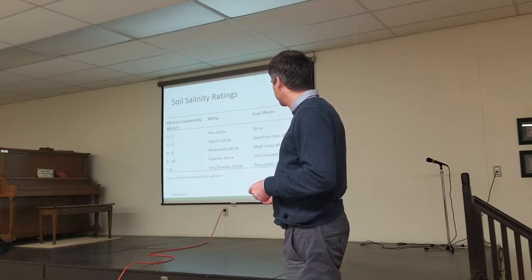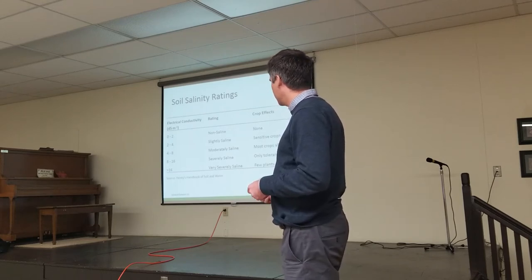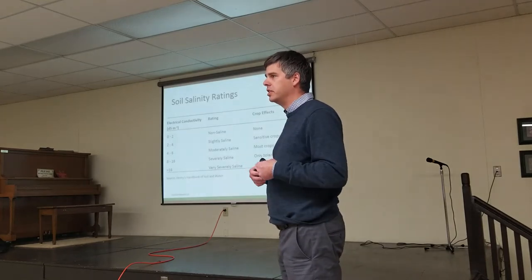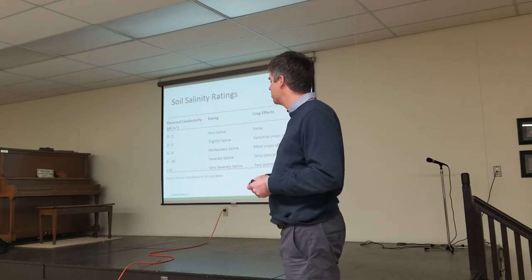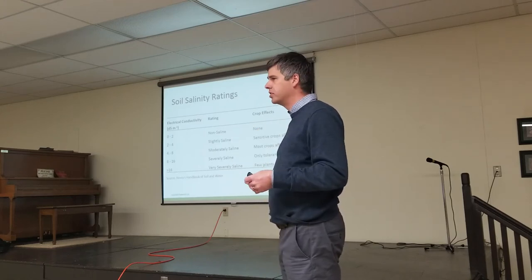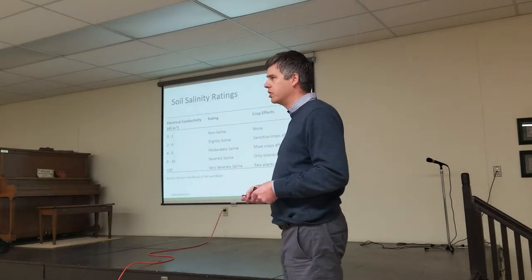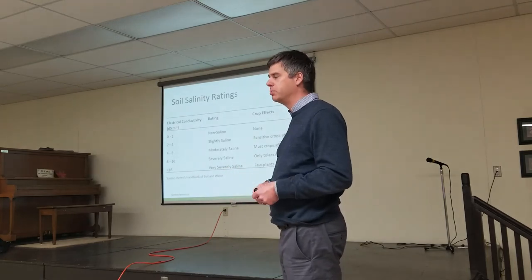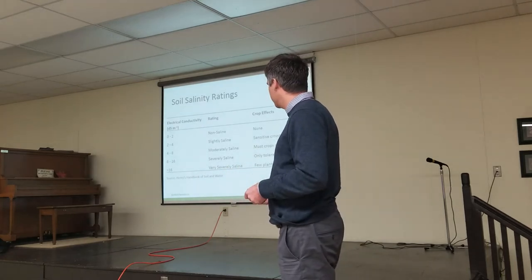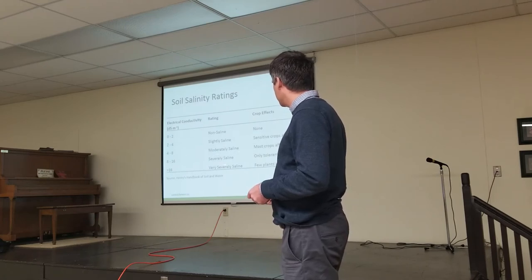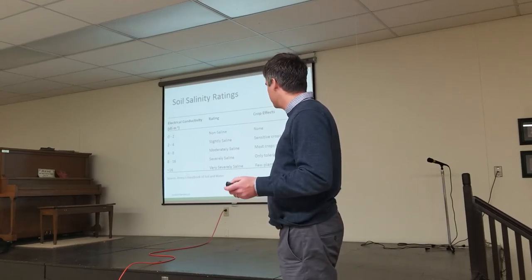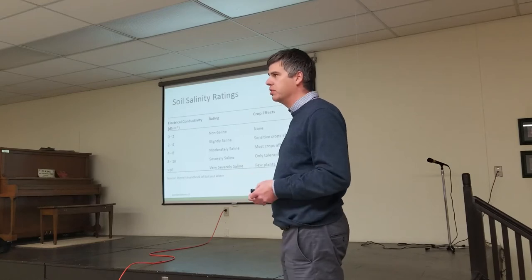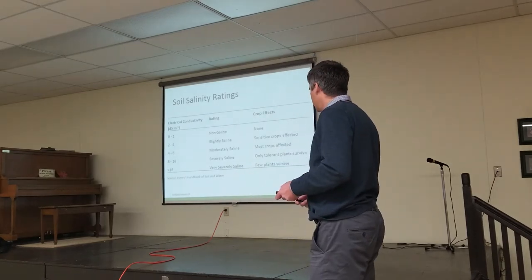Severely saline is 8 to 16 deci-Siemens per meter — that's where you really start to see the salinity in the field. There's limited emergence in these areas, reduced stand counts, and this is where you start to see kochia and other salt-tolerant species taking over. You see white crusting on the surface — these are really problematic from an agronomic standpoint. Very severely saline land has essentially zero agronomic value.